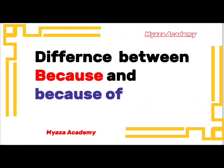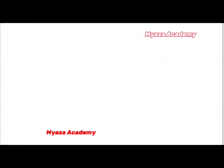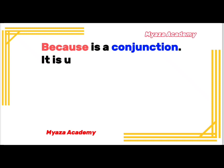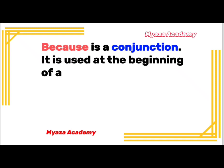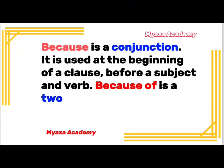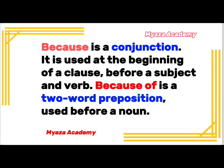This is a very interesting topic — watch it till the end. 'Because' is a conjunction; it is used at the beginning of a clause before a subject and a verb. 'Because of' is a two-word preposition used before a noun.